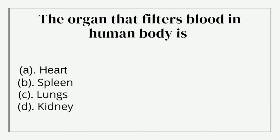The organ that filters blood in the human body is — option A: heart, option B: spleen, option C: lungs, option D: kidney. The correct answer is option D: kidney.